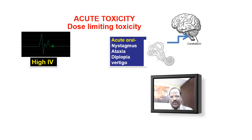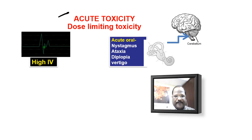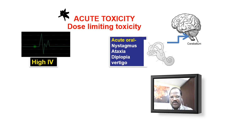Now we are going to study the adverse effects of phenytoin. For understanding the adverse effects, I am going to discuss in two parts: acute adverse effects and chronic adverse effects. First, we go for discussion of acute toxicity — that is, immediately following phenytoin therapy some problems are going to occur. These toxicities usually occur on high doses, not at the normal dose.